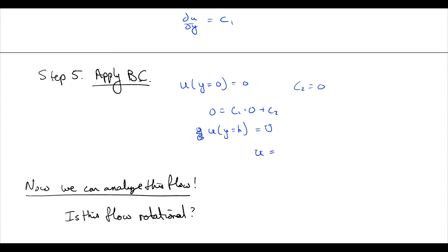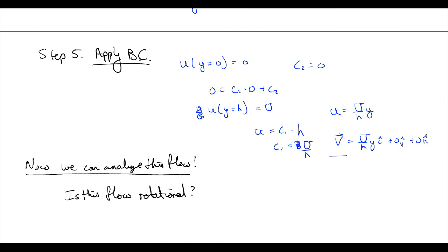And if we solve for u at y equals h, u at y equals h is equal to capital U. Then we have capital U is equal to c1 times h. So c1 is equal to capital U over h. And if we write out our whole equation now, we get u is equal to capital U over h times y. Or our velocity, if we write the Eulerian point of view, is equal to U/h*y i-hat plus zero j-hat plus zero k-hat. And we're done. Well, we're done solving it.